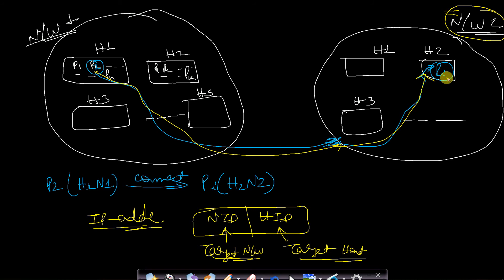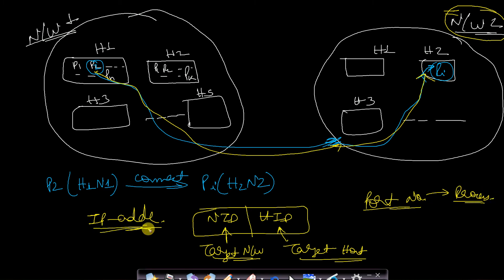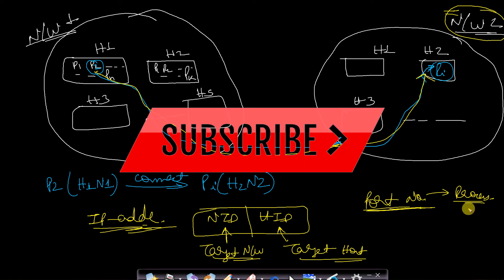Now, how can we differentiate the process Pi — how do we know which is the target process? For this reason we have the port number. The port number defines which process we are talking about. So along with the IP address, we also have port numbers. The IP address resolves the network and the host, while the port number resolves which process we are actually talking about. This is how computer networking between different hosts works.